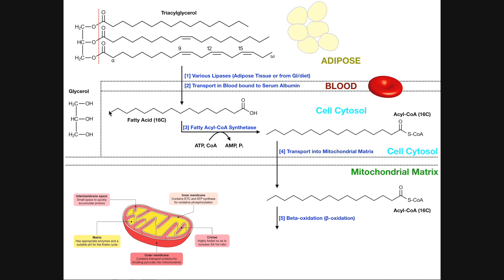When those fatty acids get into the cell's cytosol or cytoplasm, there's an enzyme called fatty acyl CoA synthetase that connects or ligates the fatty acid to a coenzyme A, which we abbreviate as CoA. This molecule is a fatty acid with 16 carbons — you can count them: one, two, three, four, all the way out to 16. Whenever we attach the coenzyme A onto the fatty acid via this enzyme, the number of carbons stays constant, and we have this coenzyme A on the end. So we go from a 16-carbon fatty acid to a 16-carbon derivative called an acyl CoA.